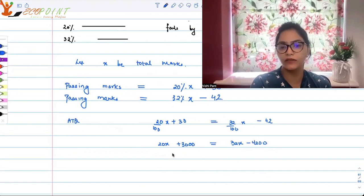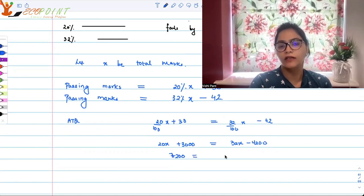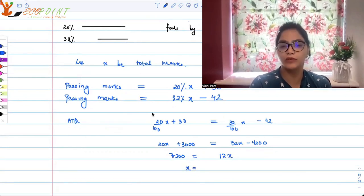Taking everything on one side: 7200 equals 12x. So x equals 7200 upon 12, which equals 600.